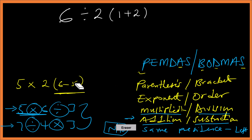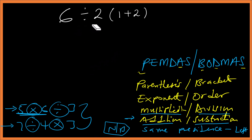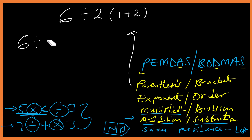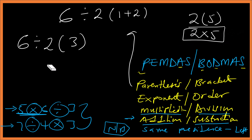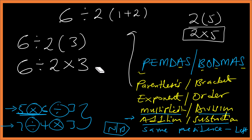Back to our question: 6 divided by 2(1 + 2). First we deal with the parenthesis: 1 plus 2 is 3. Remember, 2(3) is the same as 2 times 3. So now we have 6 divided by 2 times 3.